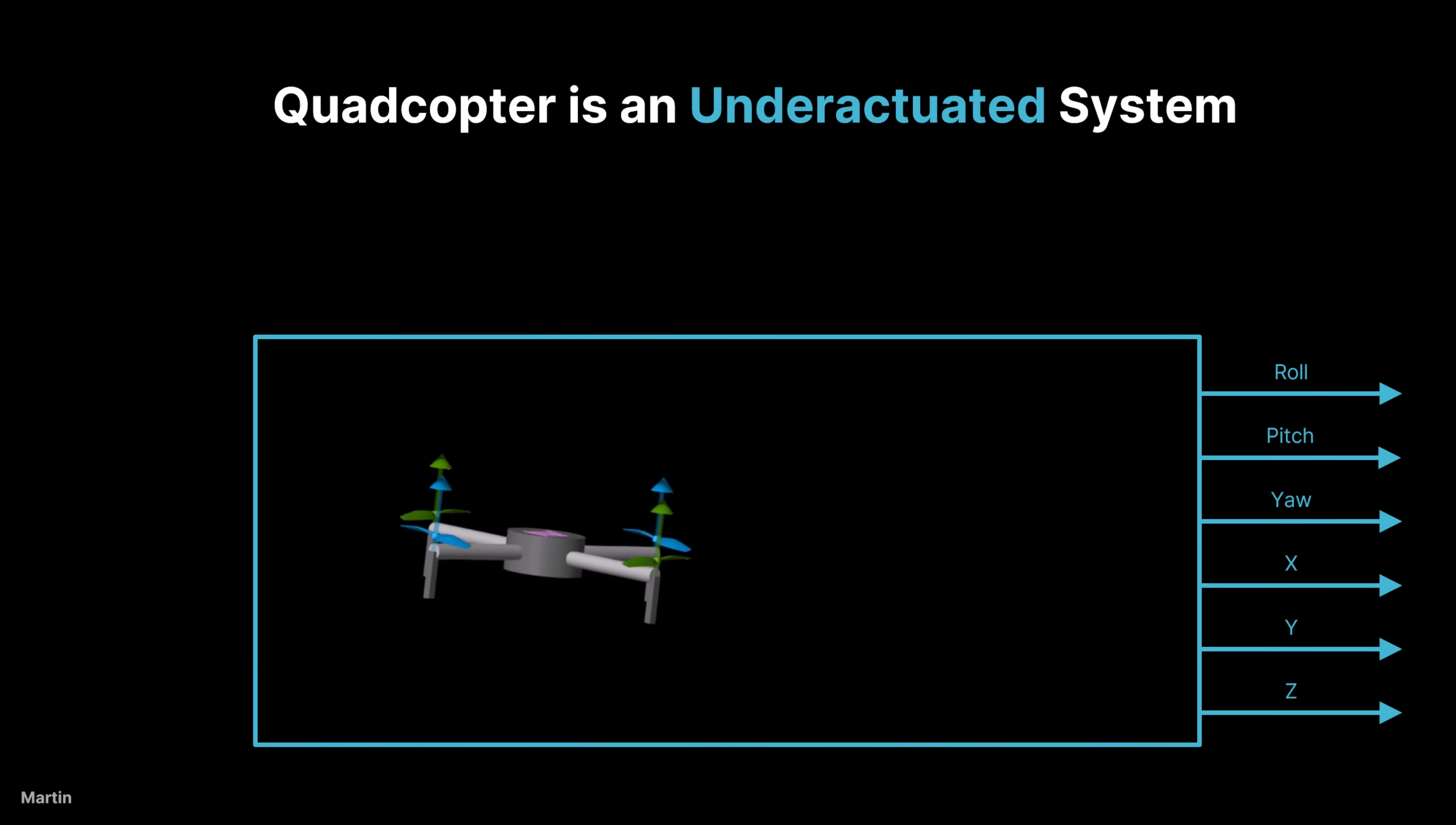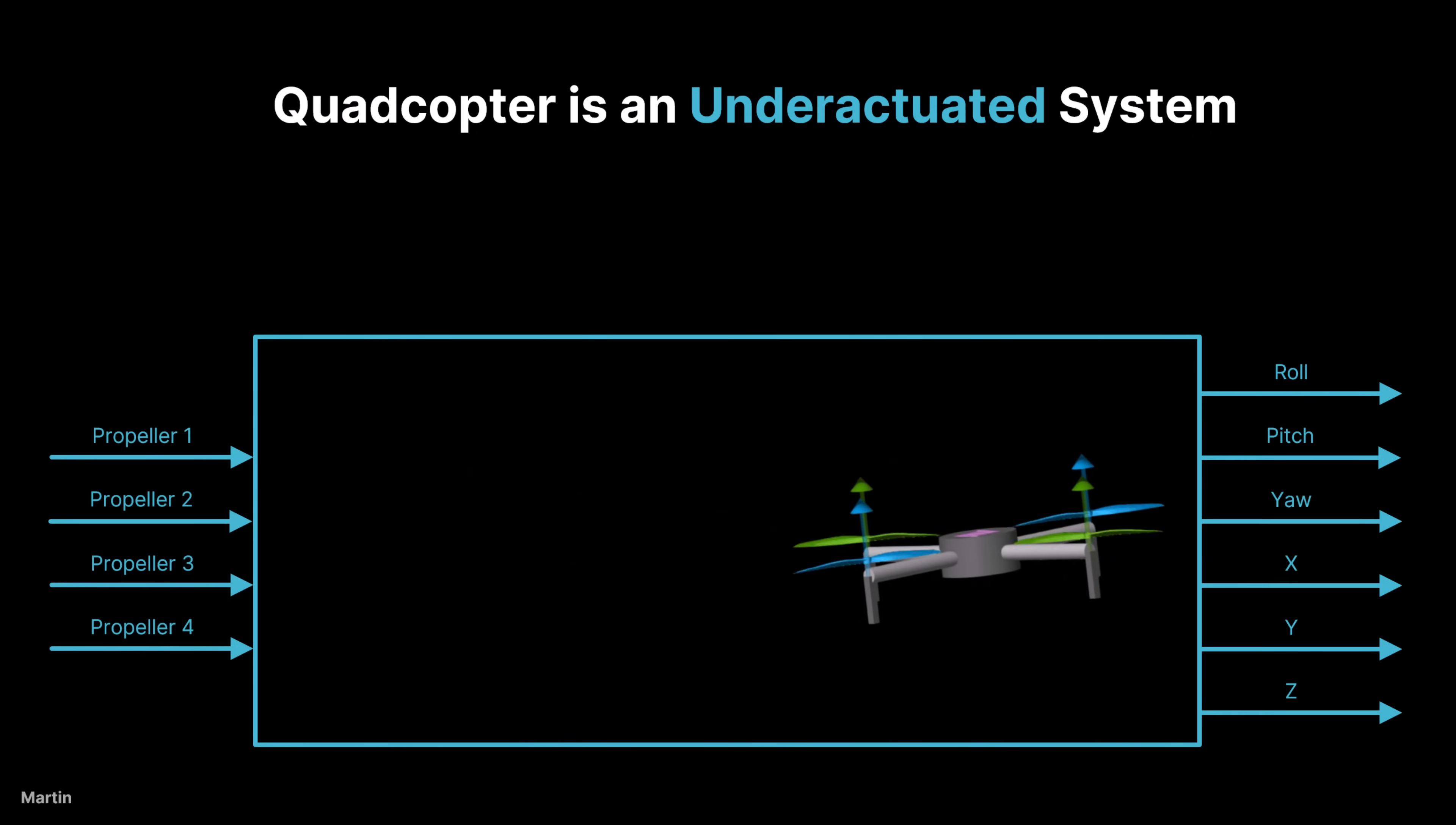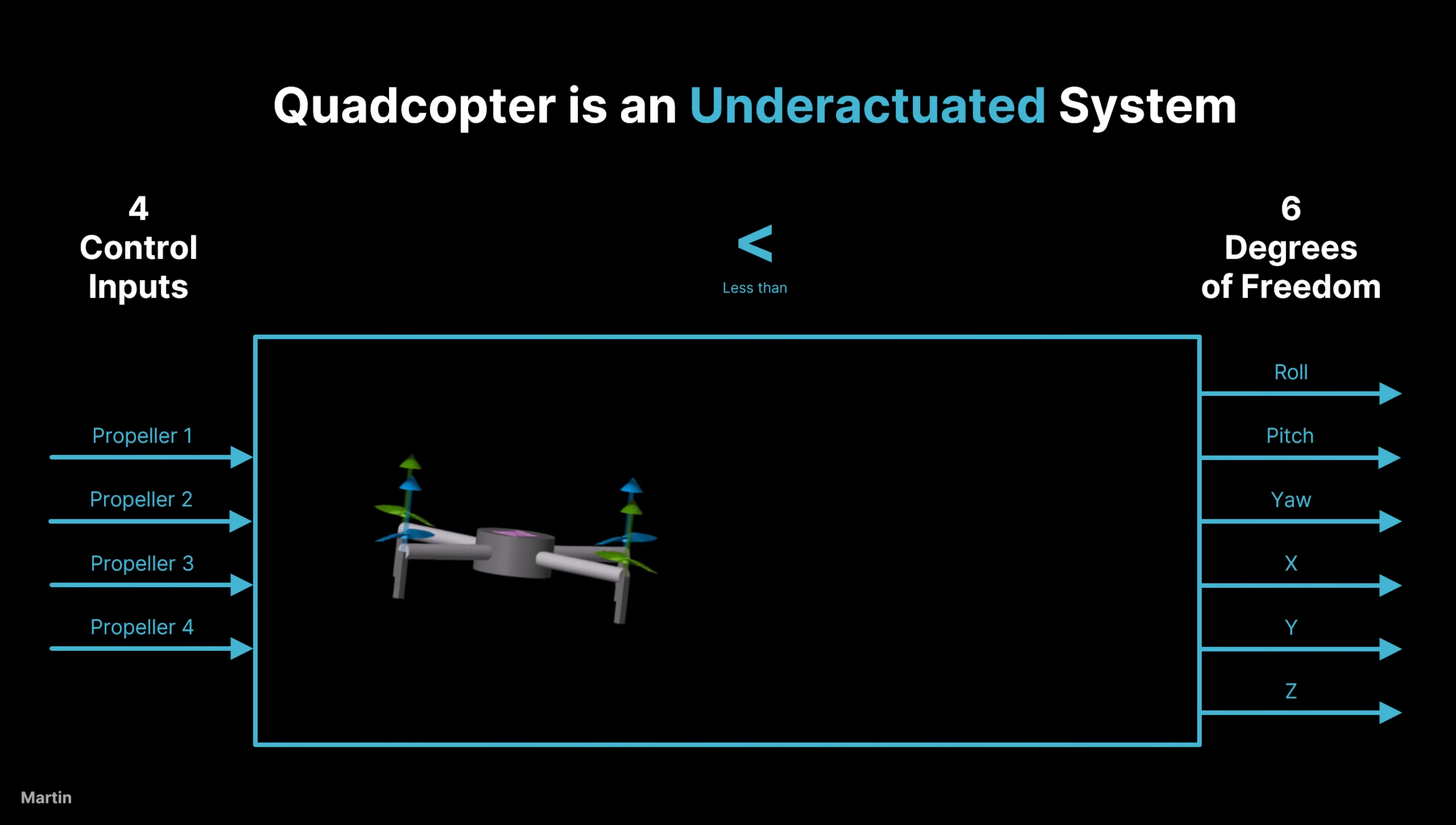However, the quadcopter only has four independent control inputs, the speeds of its four propellers. This means the system has six degrees of freedom but only four control inputs, making it underactuated. It cannot directly control all degrees of freedom independently.